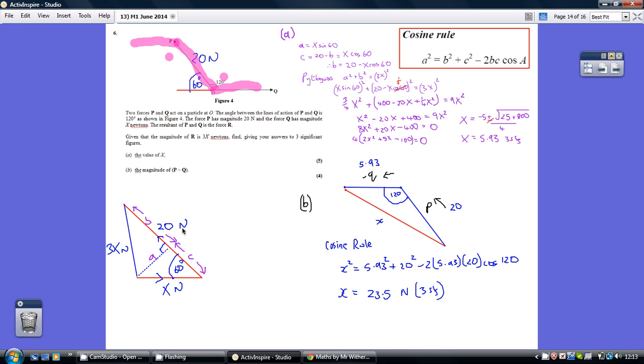Now the secret to this question was then breaking it up into two triangles. So you've got a right angle triangle and then basically using Pythagoras to work out what 3X is and hence work out what X is. So basically, we've got to start off firstly by working out the length of these two shorter sides, A and B.